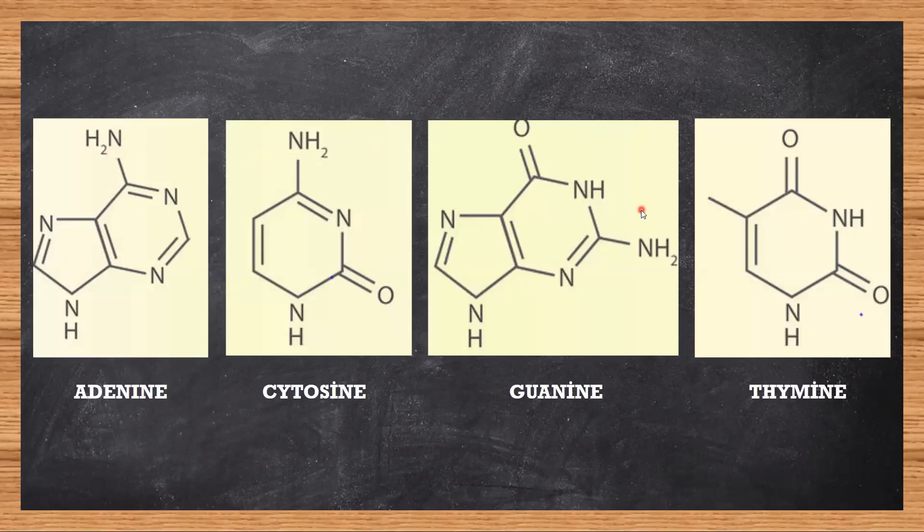One thing you need to observe in the first three structures is that each of them has an exocyclic amine group, which is lacked in thymine. Thymine just has an NH group whereas the rest have an NH2 group. Hold on to this piece of information, you will require it further.